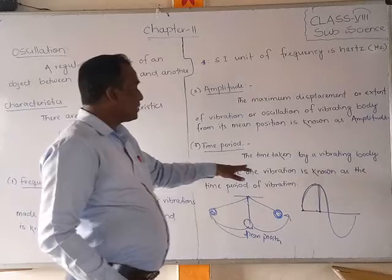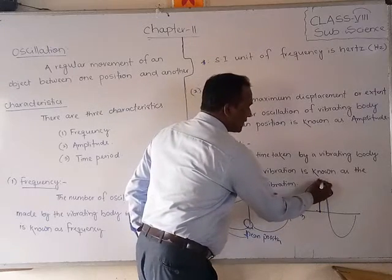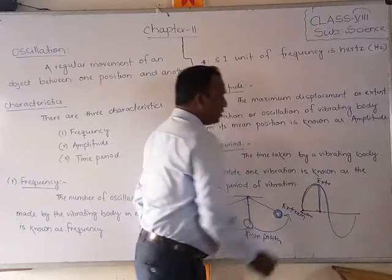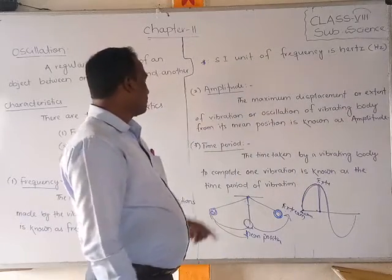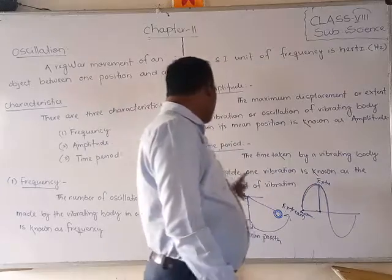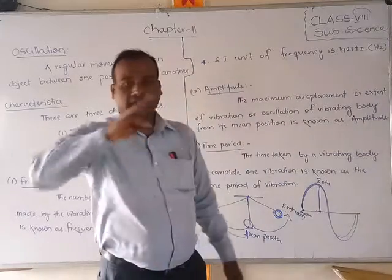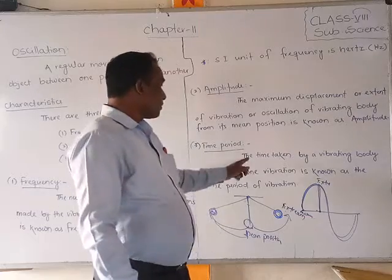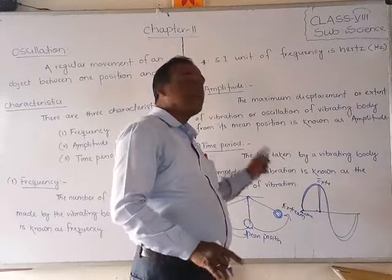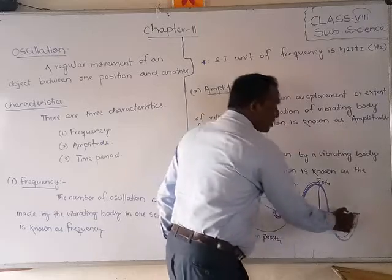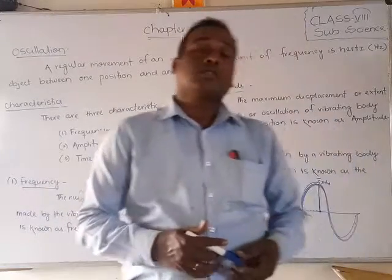Now, time period. The mean position and the extreme position — this is the extreme position and this is the mean. Time period is the time taken by a vibrating body to complete one vibration or one oscillation. From one point back to the same point is one complete oscillation. The time taken to complete that one oscillation or one vibration is called the time period.